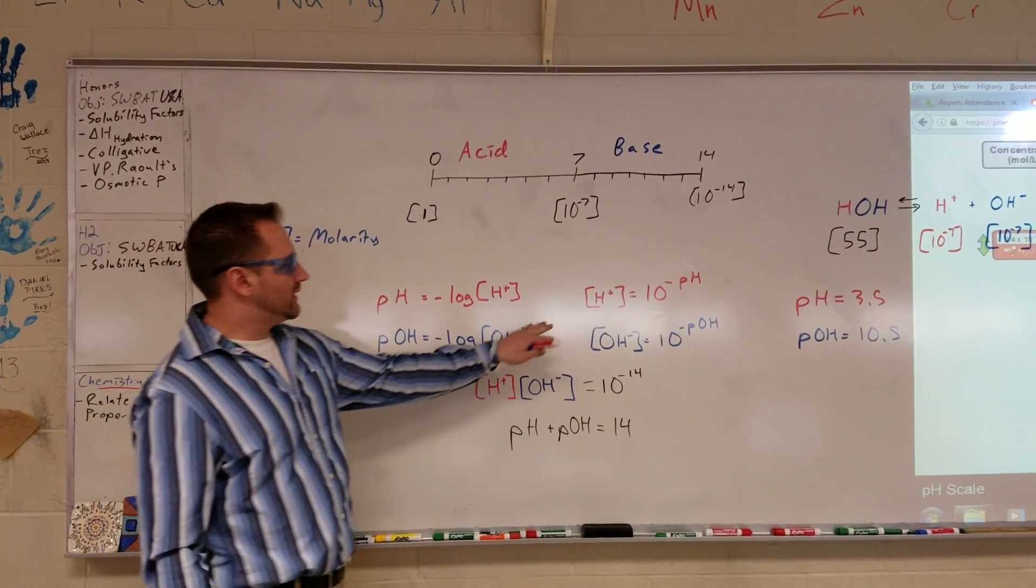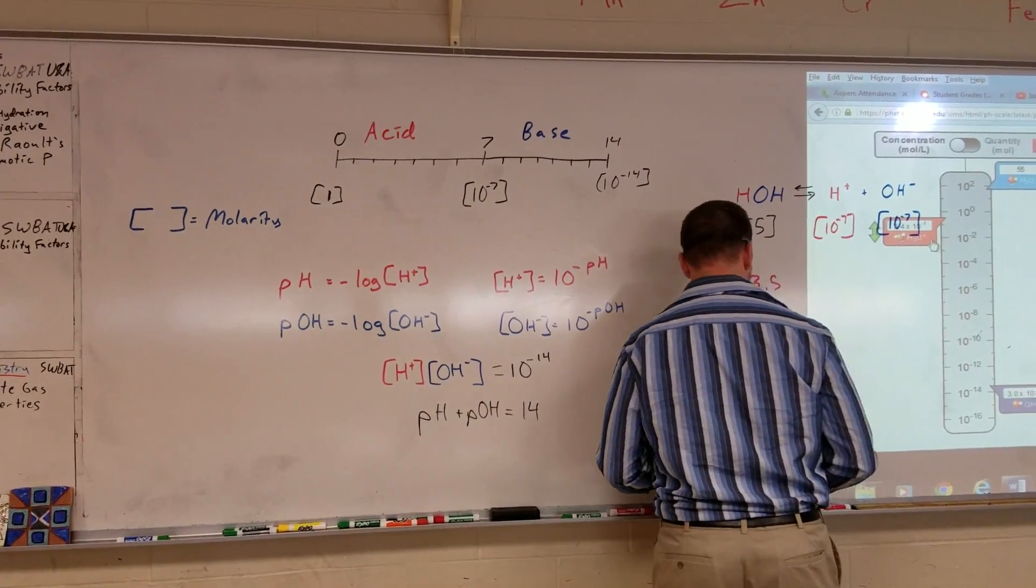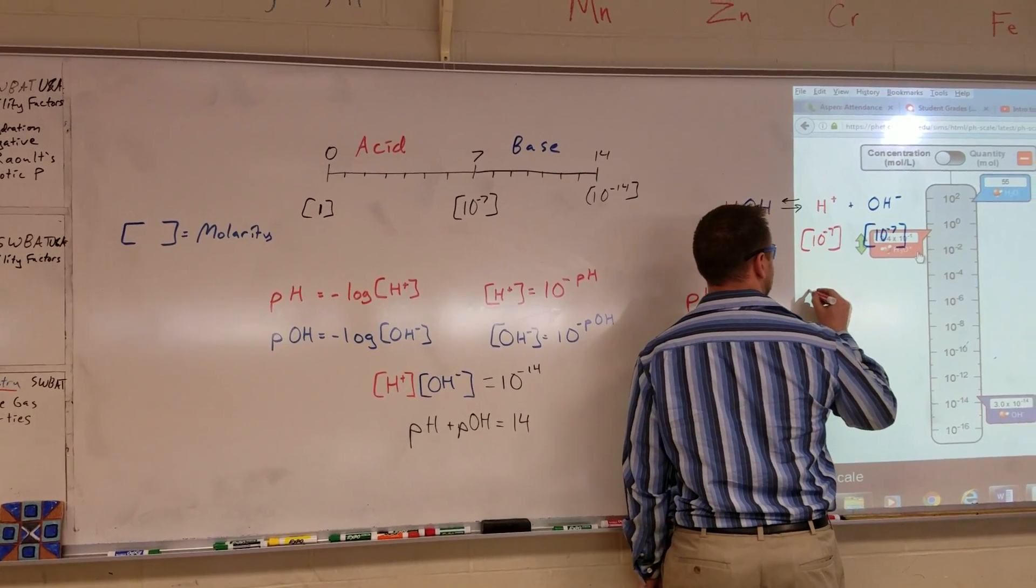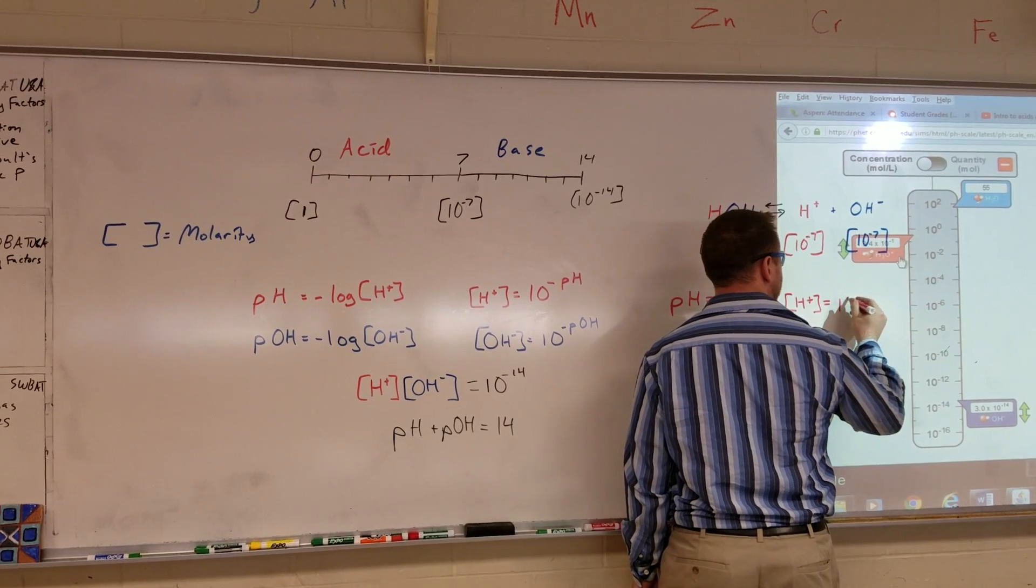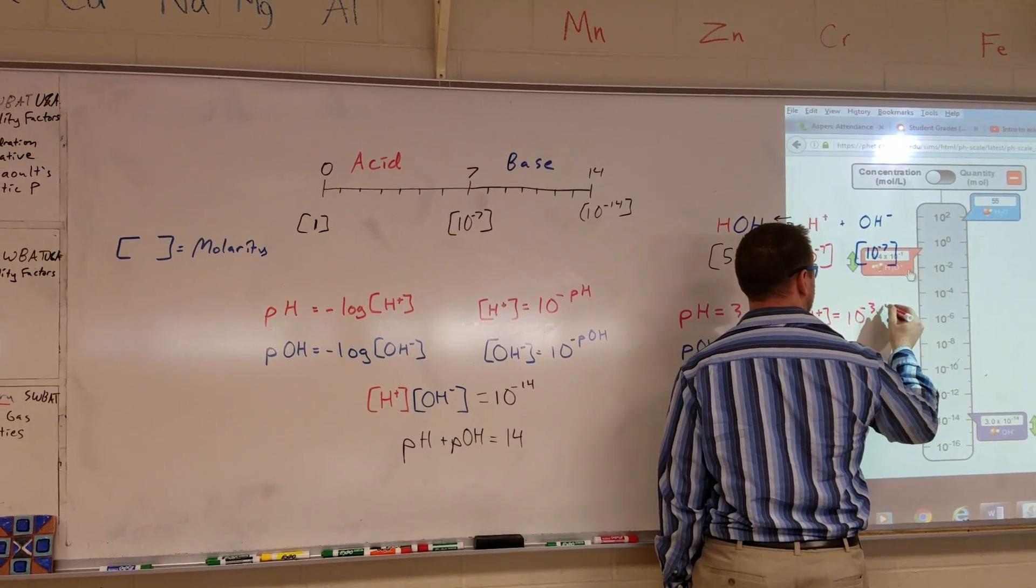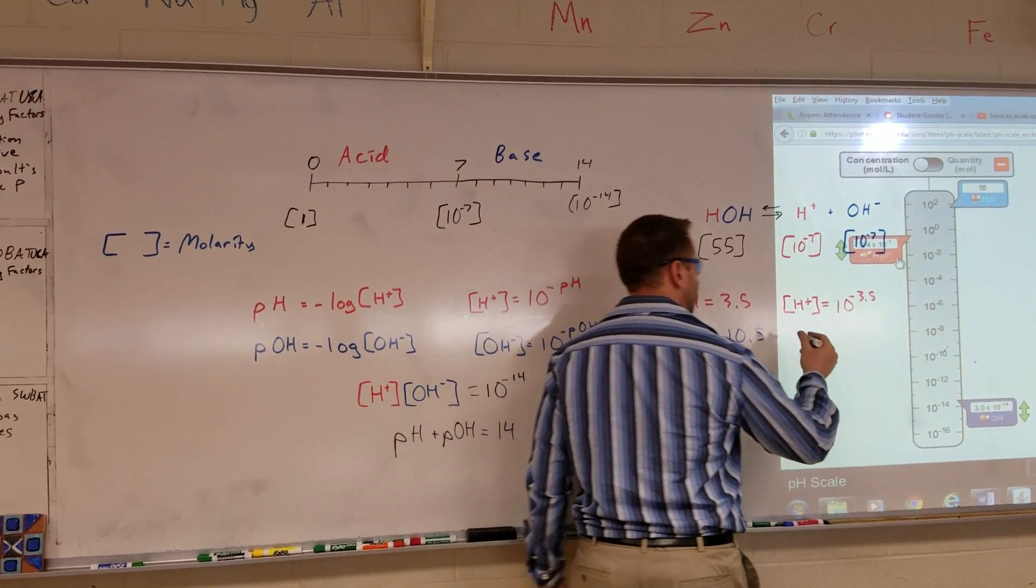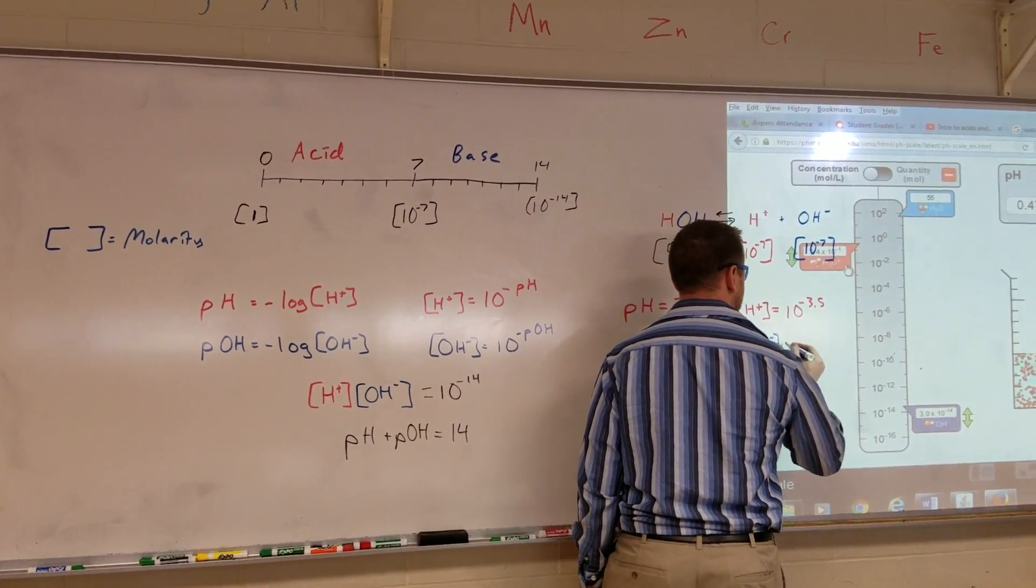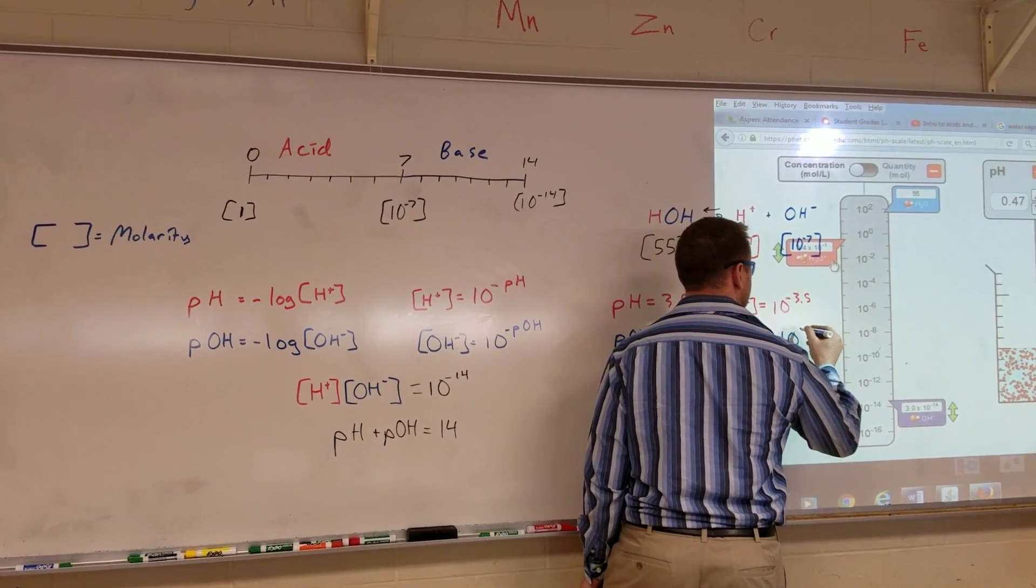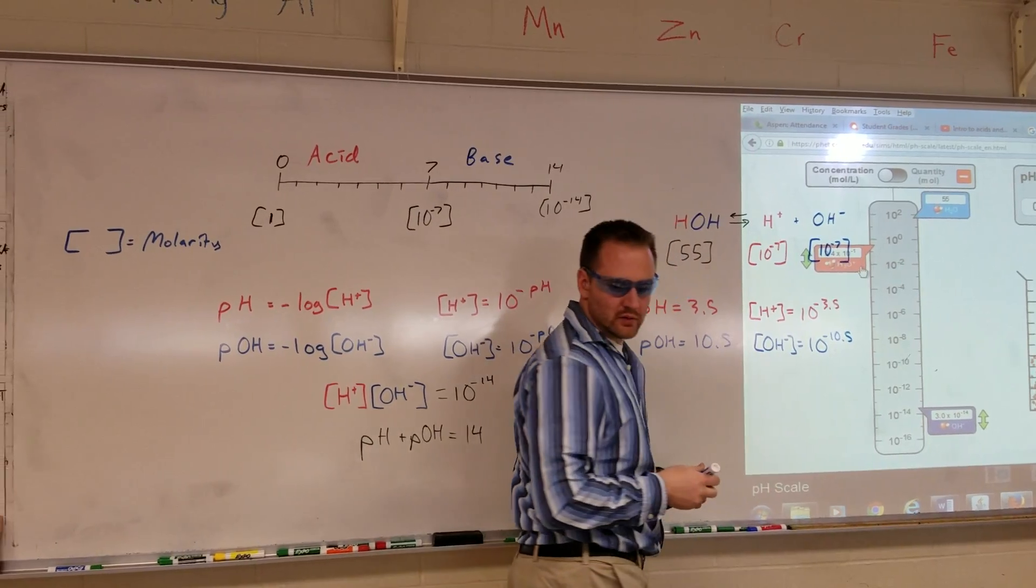You could also calculate the H+ ion concentration by raising 10 to the negative 3.5. And you could calculate the hydroxide ion concentration by raising 10 to the negative 10.5.